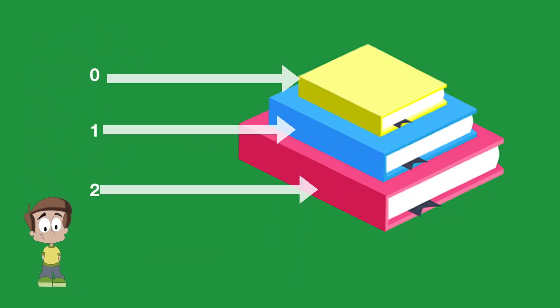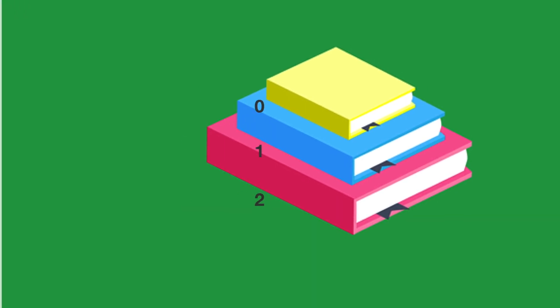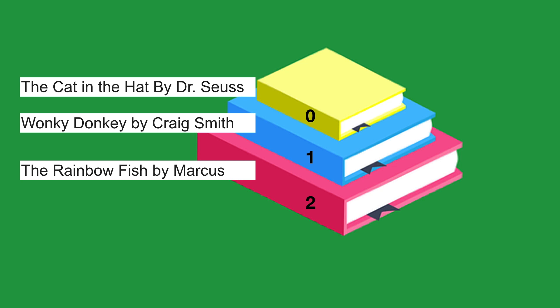My friend Hari is here. We will learn about one person on the right side. The name is Cat in the Hat by Dr. Seuss. In the first position, it is Wonky Donkey by Craig Smith. In the third position, position number 2 is The Rainbow Fish by Marcus. So this is what we will do in the program.